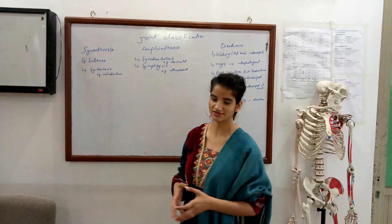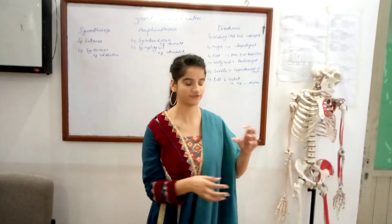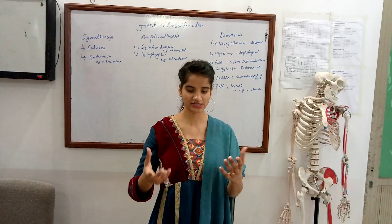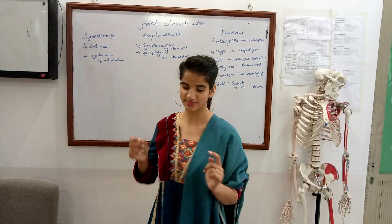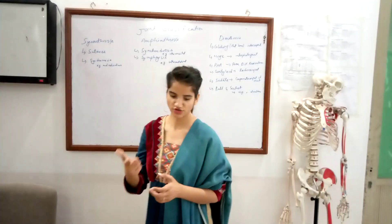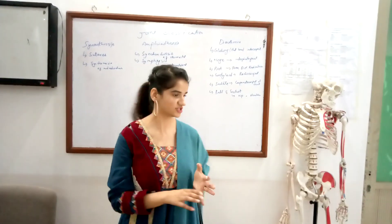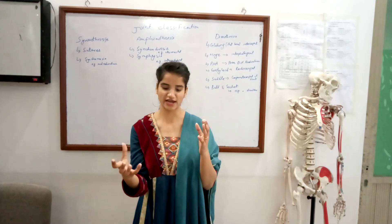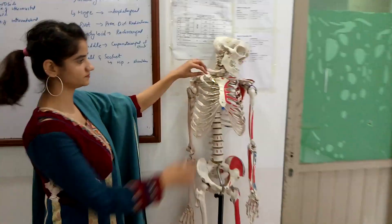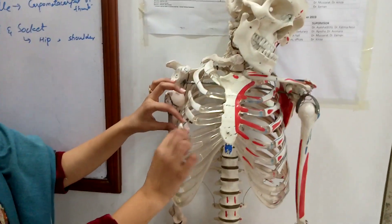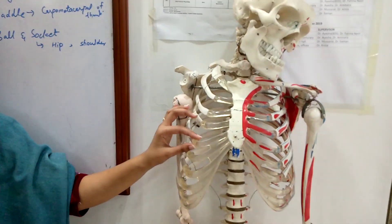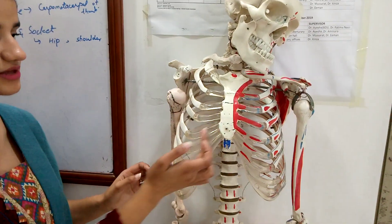Coming towards amphiarthrosis — 'amphi' means on both sides and 'arthron' means joint — these joints allow slight movement. Amphiarthrosis has two classifications: synchondrosis and symphysis. In synchondrosis, bones are held together by a cartilage. The best example is the sternocostal joint. Here you can see the sternum and the ribs; the joint formed between them is the sternocostal joint, which is a type of synchondrosis.